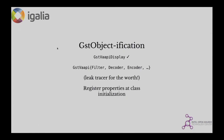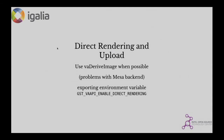The cause of this GST objectification is mainly to use the leak tracer — thanks to Guillaume. We also now register the properties at class initialization, which was not done before; it was using a linked list, which was very strange. Now it's complete.